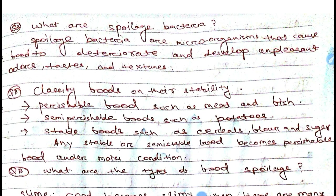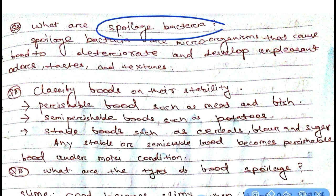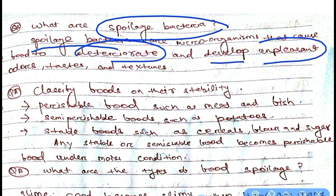In food science, spoilage of food and its preservation is very important to understand. Spoilage bacteria are microorganisms that cause food to deteriorate and develop unpleasant odors, tastes, and textures. They firmly attach to each other and develop changes in the food's appearance.